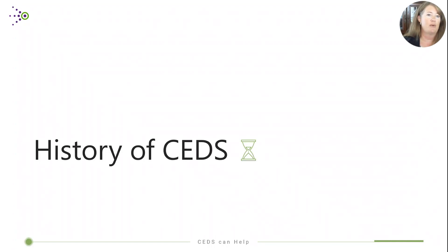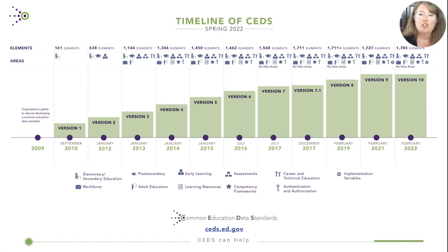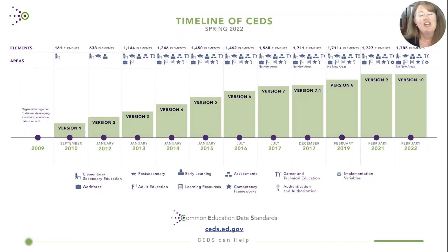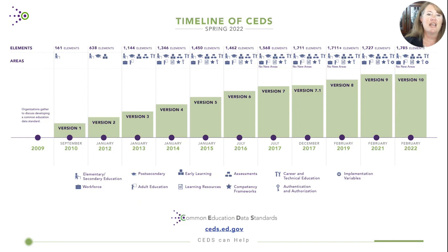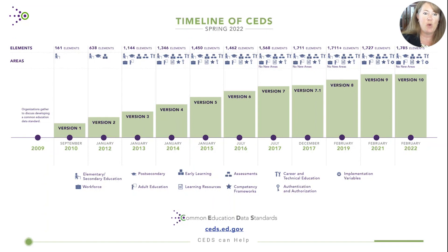Because we do have a few novices, we want to do a little bit of level setting today. The first piece is the history of CEDS. CEDS actually goes back to 2009, so we have been going strong for more than 10 years. If you look at this graph — I know there's a lot going on here — I want you to look at that second column, version two, where there are three little blocks like stacking ABC blocks. That's the indicator of when early learning was actually added to CEDS, way back in 2012.